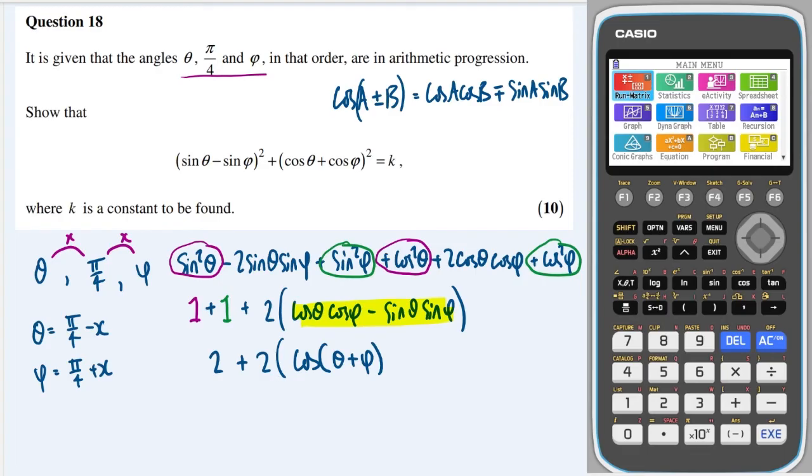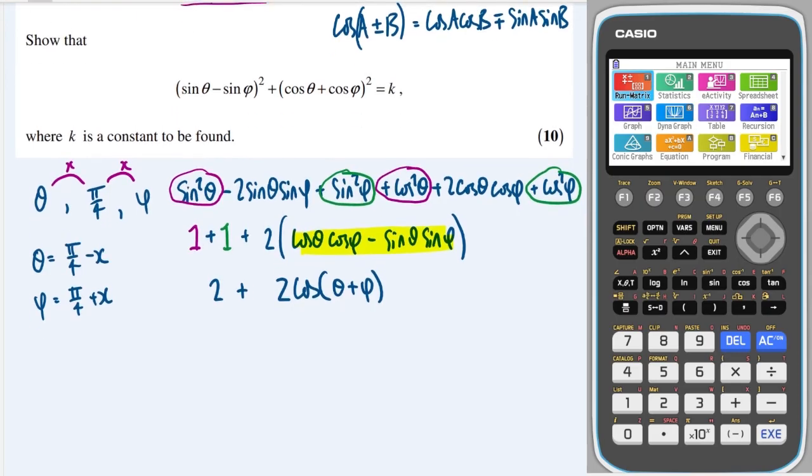And we can drop the brackets here, we don't need them. And let's move the two up a bit closer. Okay, and now we're going to use our information about the arithmetic progression. So if I make x the subject here of both these equations, I get x is equal to pi over four minus theta. And this one here, I would get x is equal to phi minus pi over four.